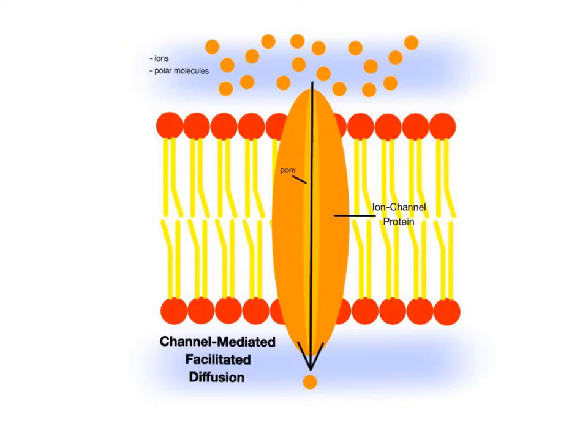This type of diffusion works well with ions and polar molecules, substances that can't move through the nonpolar regions of the lipid bilayer by themselves because of their charges. They need the help of the channel protein and the charged environment inside the tunnel.